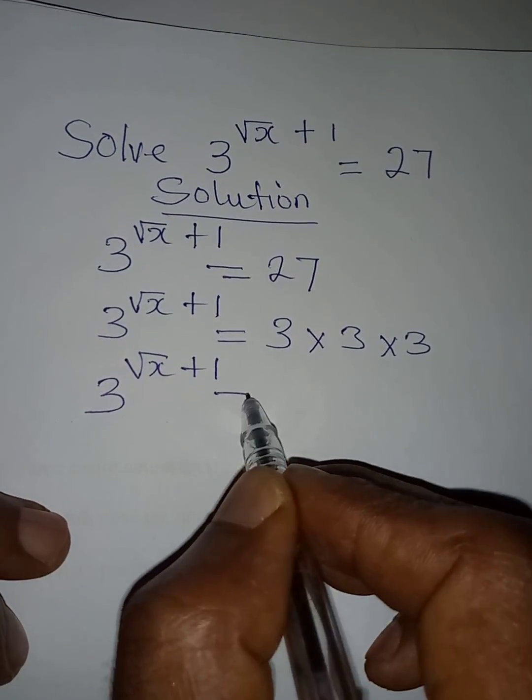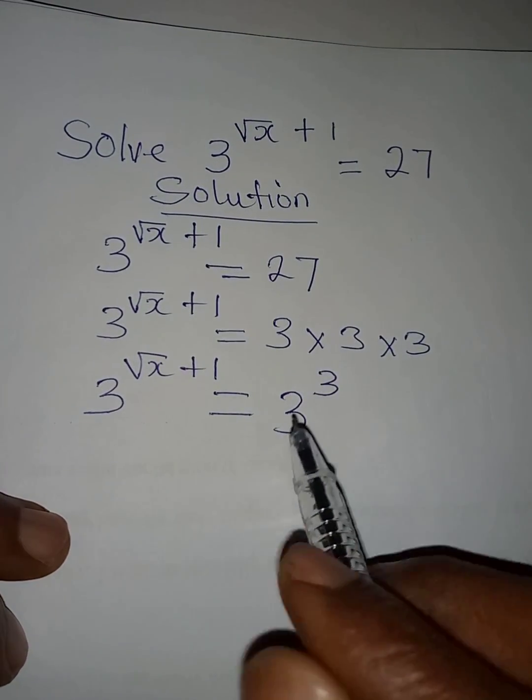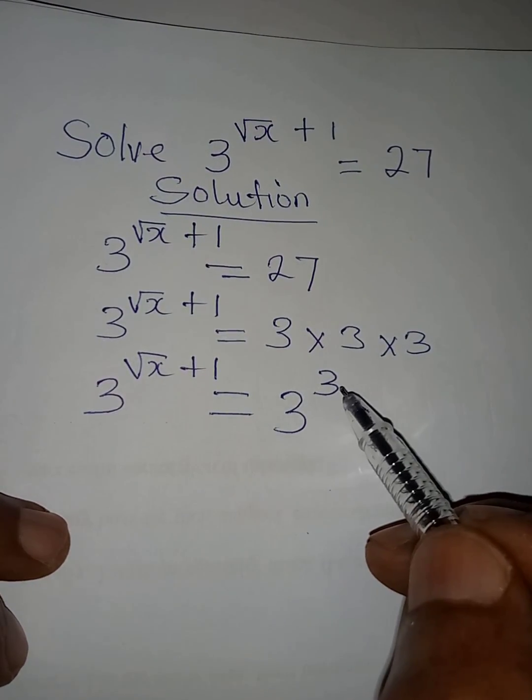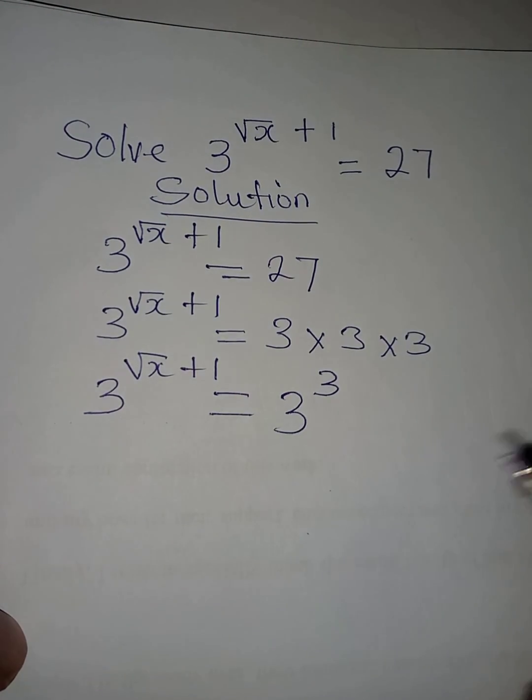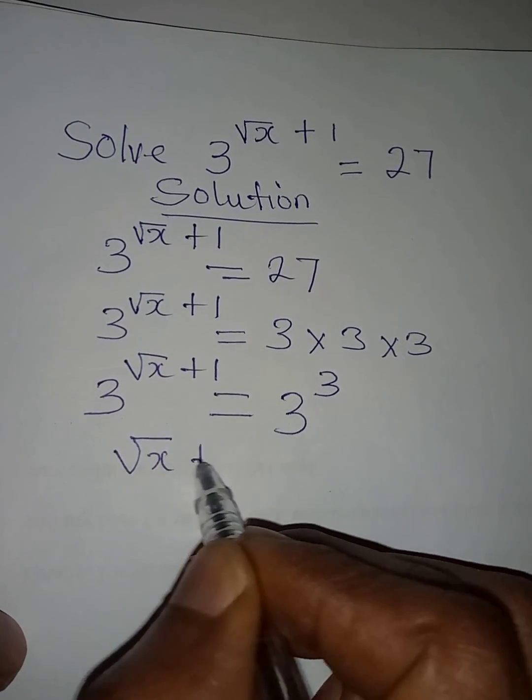Then I take another step. We have square root of x plus 1 as the power, and then equal to 3 to the power of 3, meaning we have 3 in 3 places. Now the bases are the same, we work with the powers.